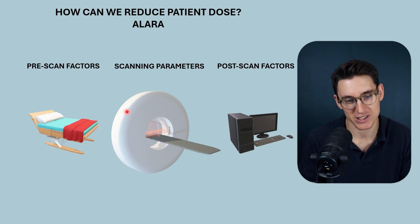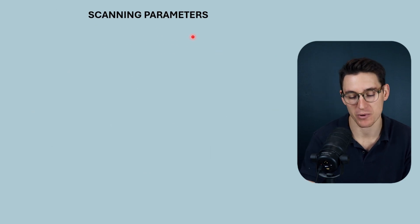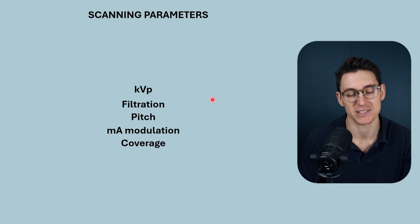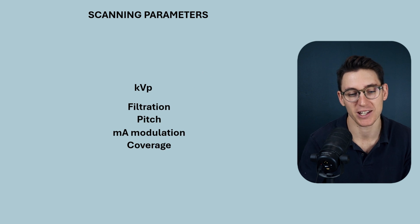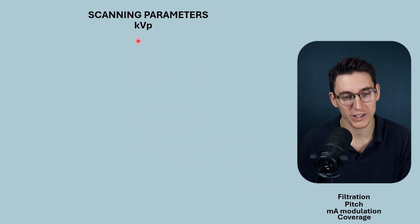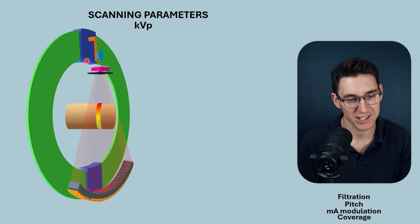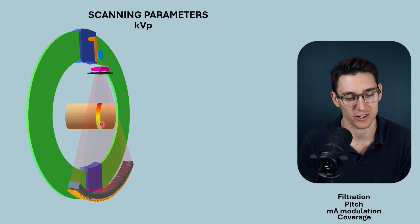Let's start by focusing on the physics components — the scanning parameters that influence patient dose. There are five different parameters I want to cover today. The first is what's known as the KVP, or the kilovolt peak. We know that when we place a patient within the CT scanner, we produce x-rays in the x-ray tube, and those x-rays head out towards the patient where dose is distributed.